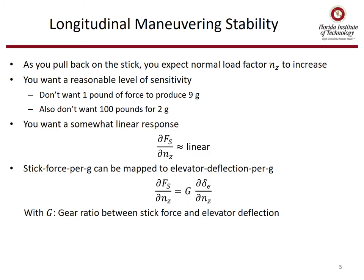For longitudinal maneuvering, you typically pull back on the stick and expect the normal load factor to increase. You want a reasonable level of sensitivity — one pound of stick force shouldn't get you right away to 9 G's, but to get to 2 G's you shouldn't have to pull 100 pounds. We also want the slope of stick force per G to be somewhat linear, and we can map stick force per G to elevator per G, typically with a gearing ratio constant G.